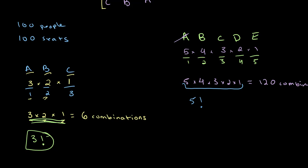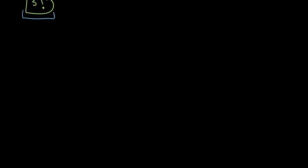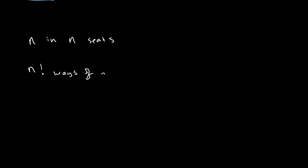So we're starting to see a pattern here. When we had three people and three seats there were three factorial possibilities. With five people and five seats there are five factorial possibilities. From this we can derive a general rule: if we have n people in n seats, they can be arranged in n factorial ways.